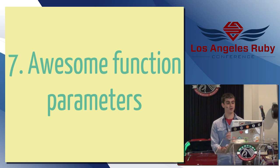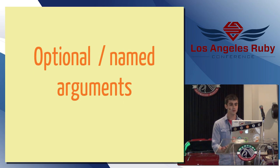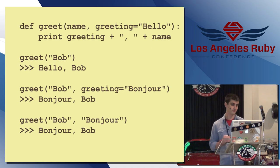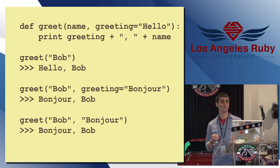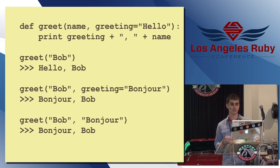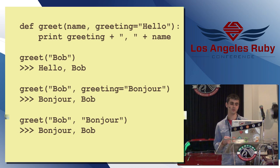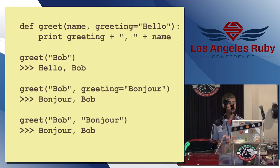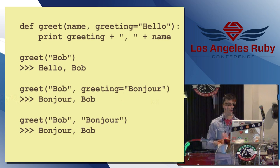Both languages have awesome stuff you can do with function slash method parameters. You've got optional or named arguments. So, in Python, here's a really quick example. I define a greet function that has a name parameter and an optional greeting parameter that's also named, and the default value is hello. So, and this function just prints the greeting to that person with that name. So, if I say greet Bob, it will use the default value of greeting. So, it'll say hello, Bob. If I say greet Bob and then use a name parameter and say greeting equals bonjour, it will say bonjour, Bob. But if I don't want to, I don't have to name that parameter since it's the last one on the list. So, I can just say greet Bob bonjour and it will be the same result.